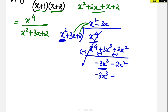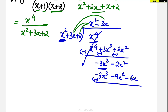Multiplying minus 3x with the other terms gives minus 9x squared and minus 6x. After subtraction: minus 3x cubed cancels; minus 2x squared minus into minus of minus gives minus 2x squared plus 9x squared, which is 7x squared. Then plus 6x.